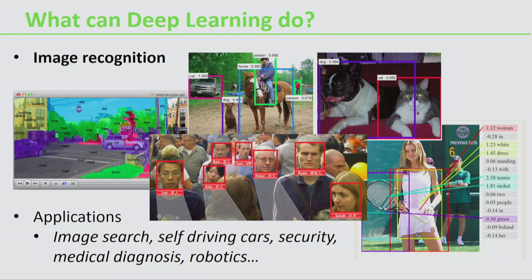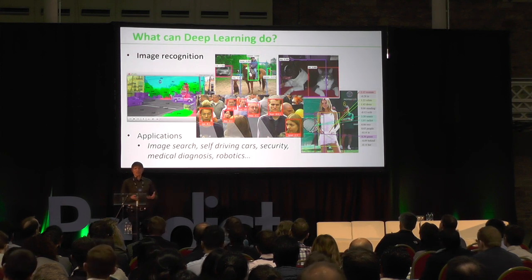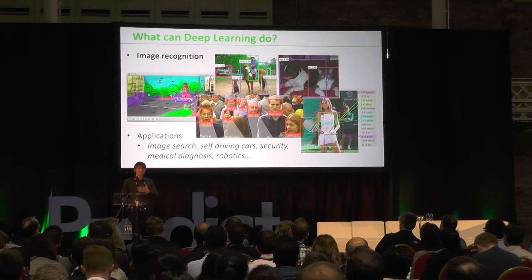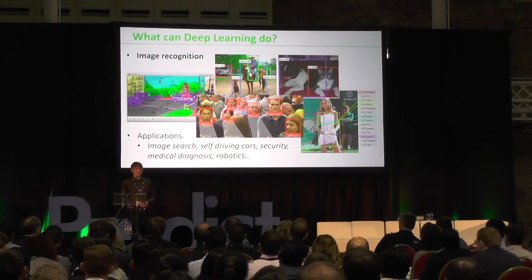We can see a lot of applications in this area. For example, image search: many people use Google Photos to store photos taken on their phone, and now you can search that library — type in 'photos of the beach' and it will show any beach photos you have, even though you never labelled those images. There's deep learning technology behind the scenes understanding what concept is in your photos. There are also many applications in self-driving cars, security, medical diagnosis, and robotics.